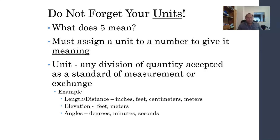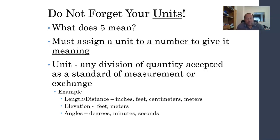What does '5' mean? It means absolutely nothing without a unit attached to it. That's going to be big when talking about maps and measurements. Don't ever give me a number without a unit. Is it 40 people? Goats? Miles? Acres? A unit by definition is any division of quantity accepted as a standard of measurement or exchange. Length and distance units include inches, feet, centimeters, meters, miles. Elevation uses feet or meters. Angles use degrees, minutes, seconds — and we'll definitely go over degrees, minutes, seconds when we do our compass and pacing lab.